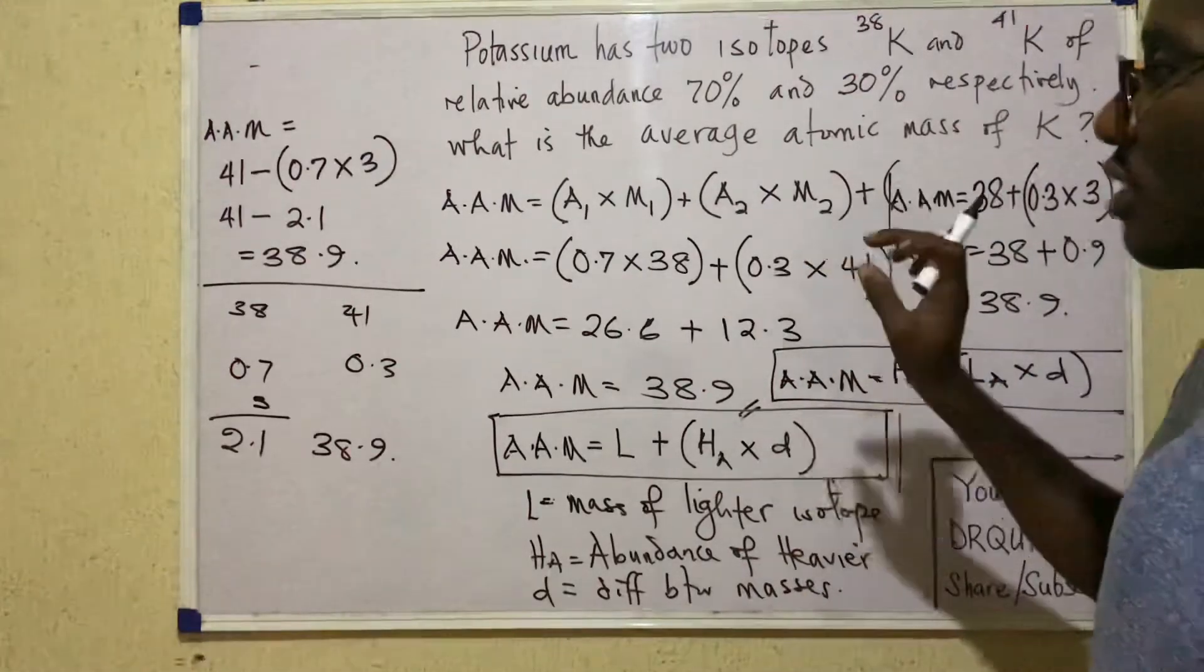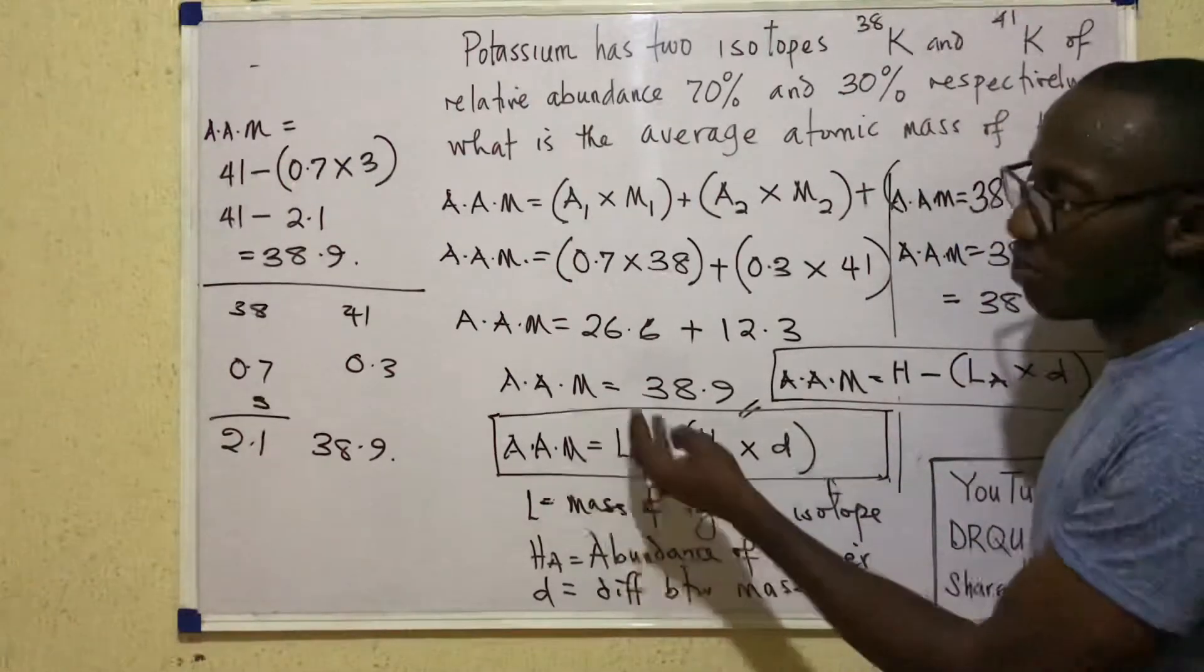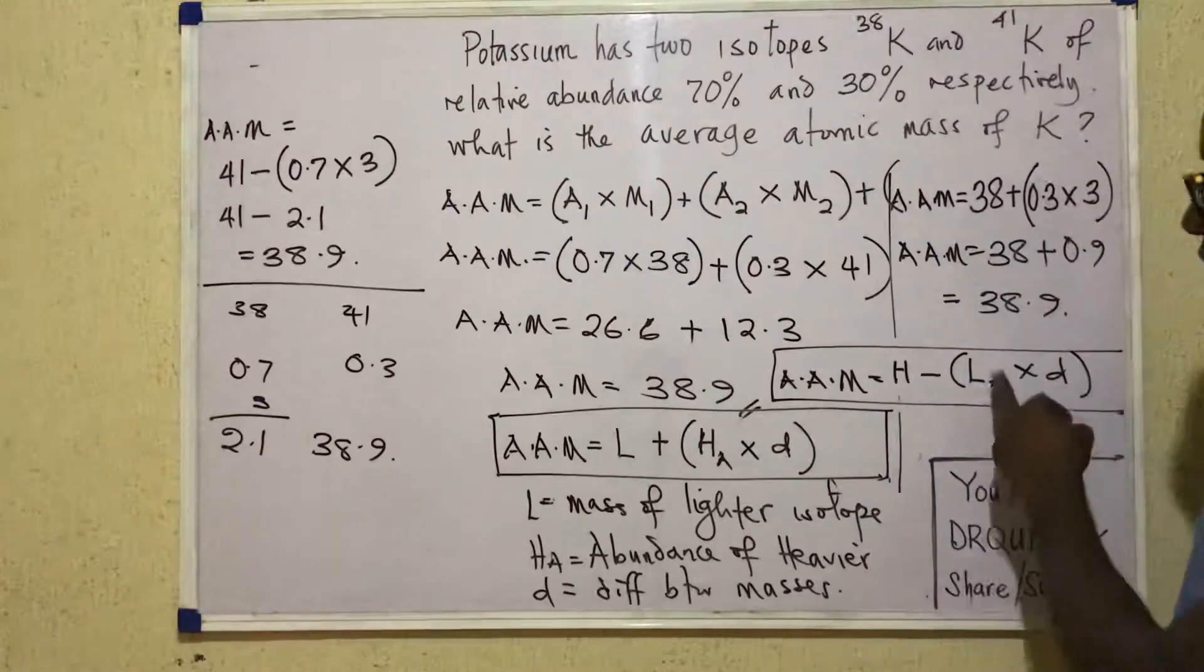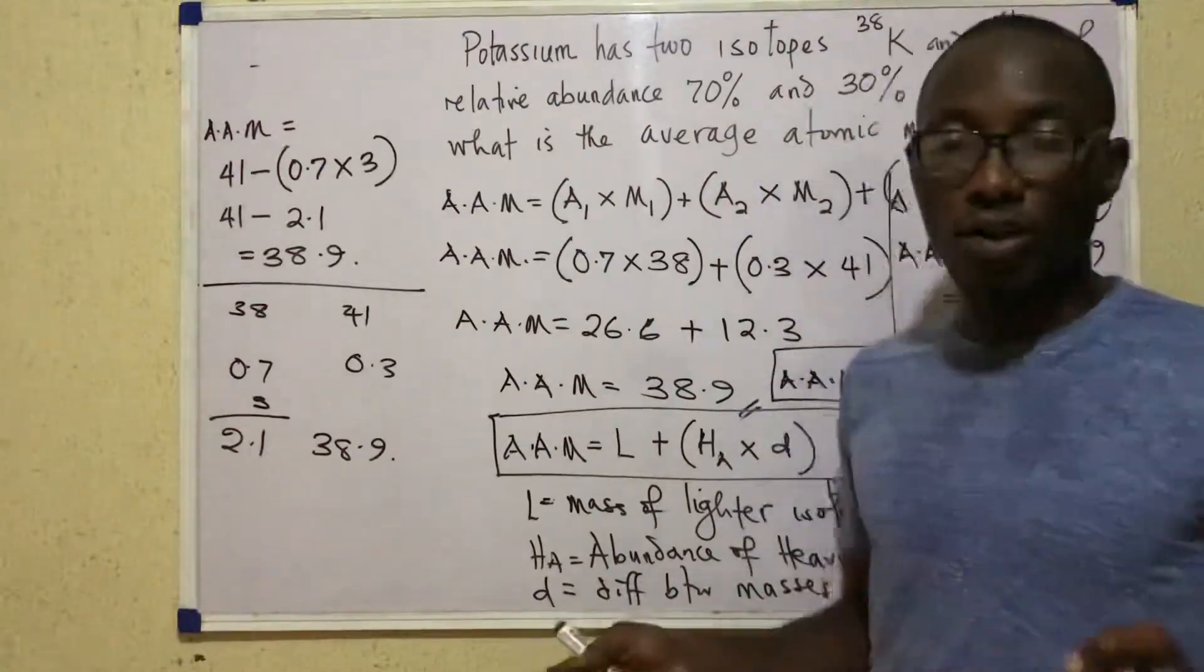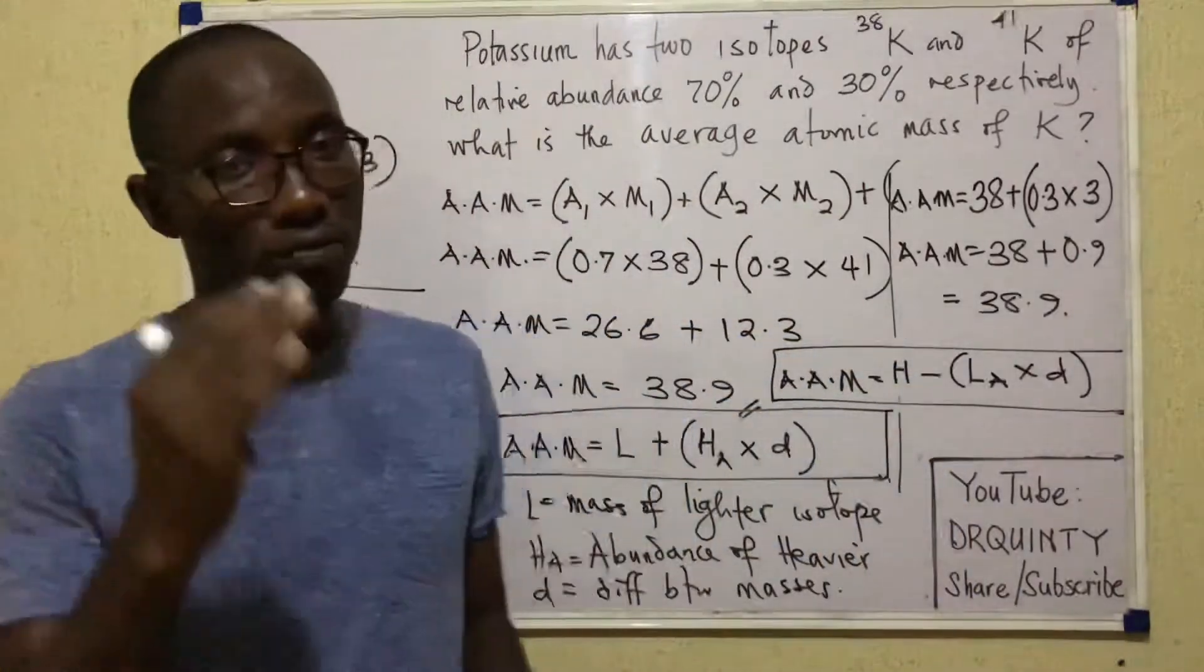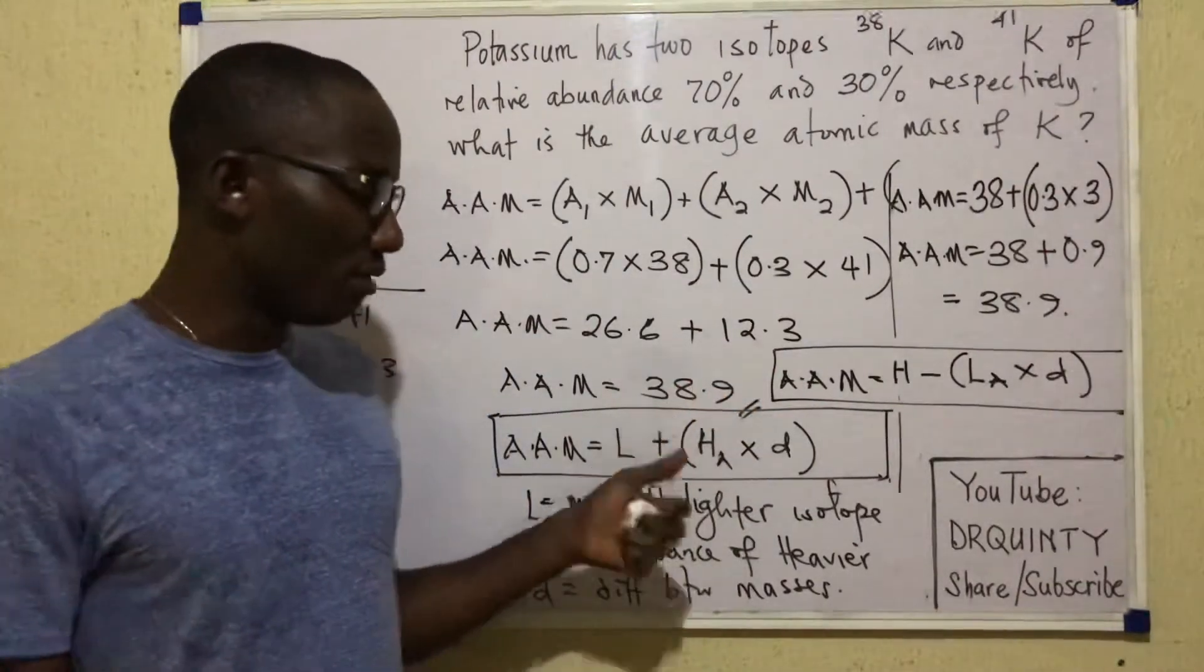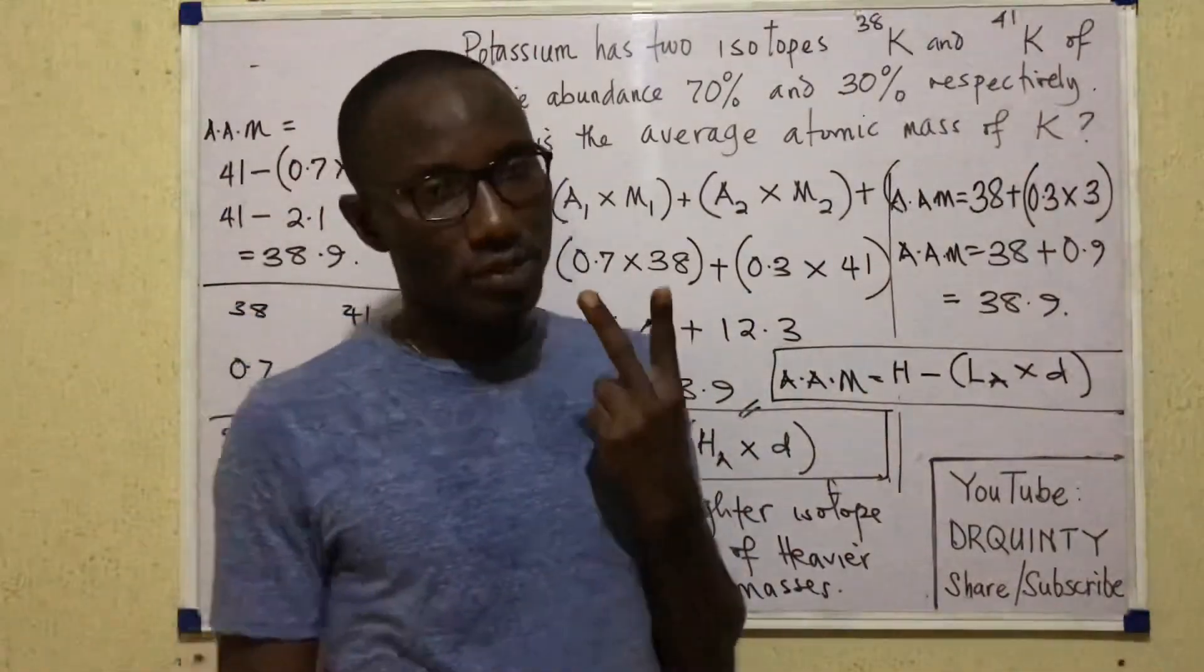Then finally, there are questions on isotope where you are not asked to calculate average atomic mass. You may have been given average atomic mass and asked to calculate something else. Maybe abundance of the heavier isotope or abundance of the lighter isotope. You can use any of these formulas even in such cases. All you need to do is make whatever you are looking for the subject of the formula. So you try to practice on this. Look for more questions on this to solve. And I believe that these two formulas will not fail as long as you are dealing with a two isotope situation.